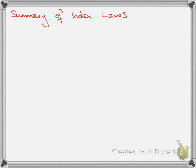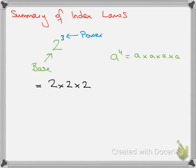First, a little summary of the index laws. When we're talking about indices — for example, 2 to the power of 3 — the 2 is called our base and the 3 is called our power. That means 2 has been multiplied 3 times. This also applies to letters: a to the power of 4 literally means a has been multiplied by itself 4 times.